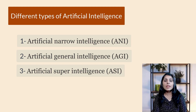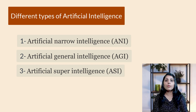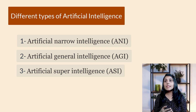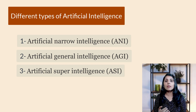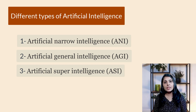Hello everyone, this is Arohi and welcome to my channel. In this video I'll talk about different types of AI. AI can be categorized into three main types: the first one is Artificial Narrow Intelligence, the second is Artificial General Intelligence, and the third one is Artificial Super Intelligence. Today I'll explain each AI type with its example.